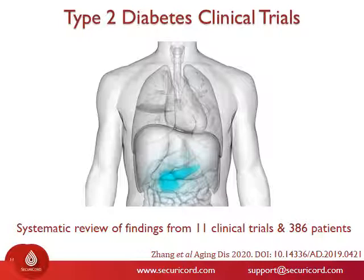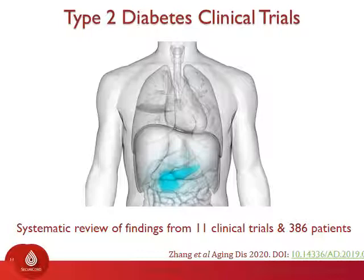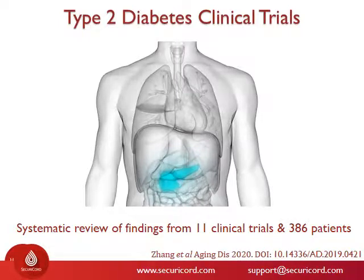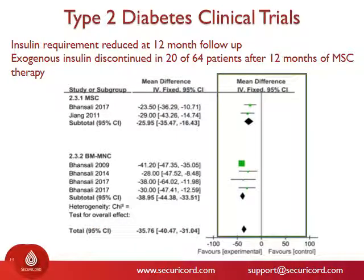Next, I want to highlight clinical trials involving type 2 diabetes and stem cell therapy. Type 2 diabetes is a metabolic disease linked to the hormone insulin, which is responsible for regulating blood sugar levels. People with type 2 diabetes are unable to either produce insulin or their bodies have stopped responding to it, so their blood sugar levels remain constantly high. The data I'm going to show you comes from 11 clinical trials involving 386 patients with type 2 diabetes who were treated with stem cell therapy. This is a summary of data looking at insulin requirement after 12 months of therapy.